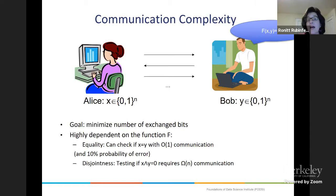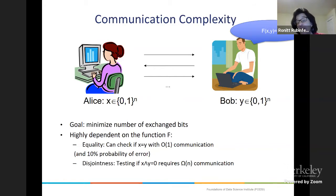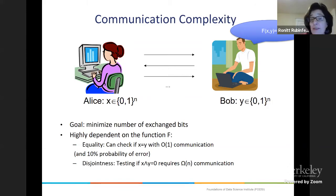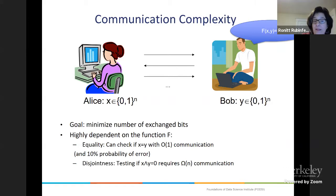On the other hand, consider disjointness. Maybe Alice's string represents all the items she wants to buy in the grocery store — she has zeros for items she doesn't want and a one in location i if she wants the ith item. Bob has the same with his string y. We want to see if Alice and Bob want to buy any of the same items. This is the disjointness problem, and it requires Omega(n) bits of communication, where n is the number of items. That's a much different problem than equality.